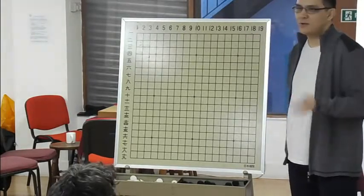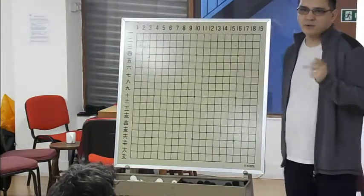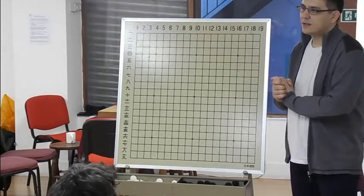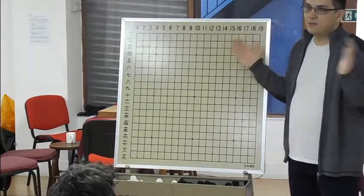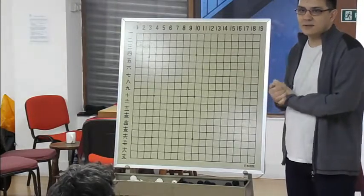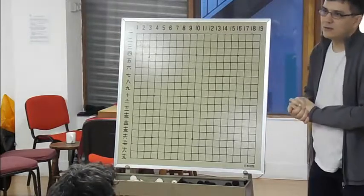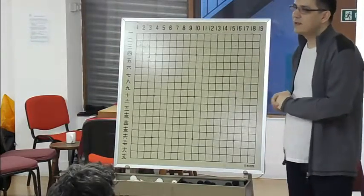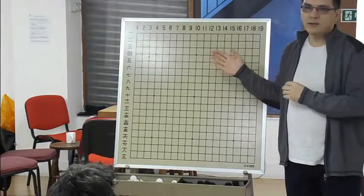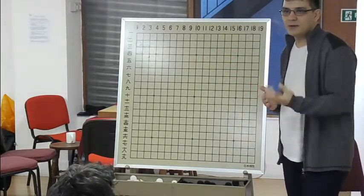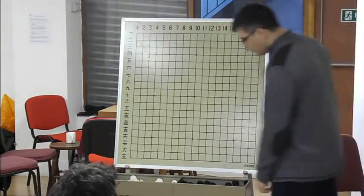I think for people who really want to improve, this should be like a daily exercise. Even if you make one tsumego every day, if you think one year, it's already more than 300 problems. This starts to count. In my opinion, it's better to make one problem each day than to make 30 problems in one day and then do nothing for a month, because this is about your personal discipline.